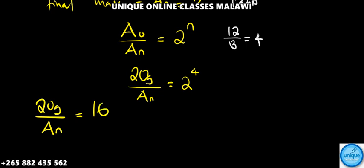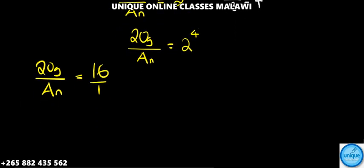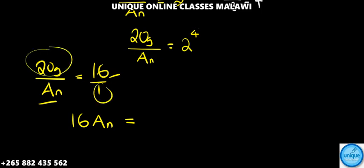Using cross multiplication, 16 times Aₙ equals 20 grams.